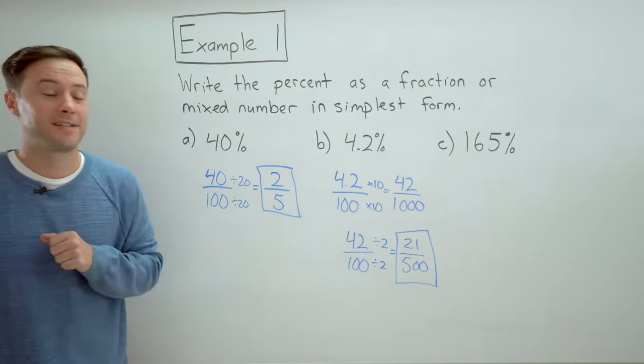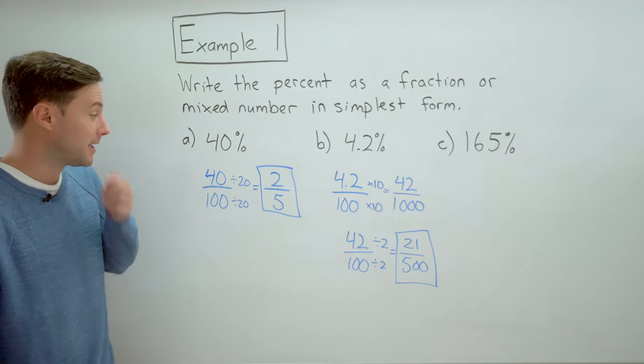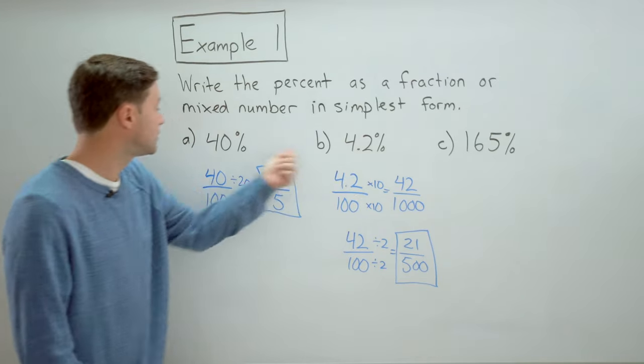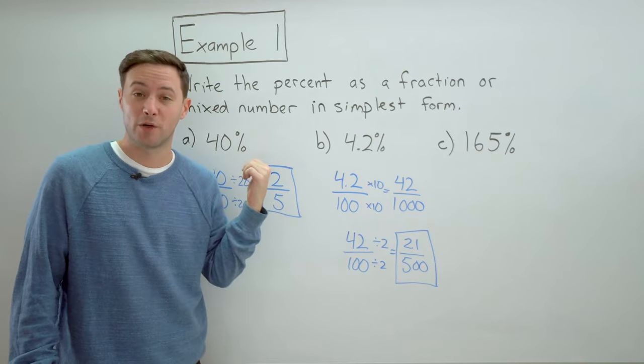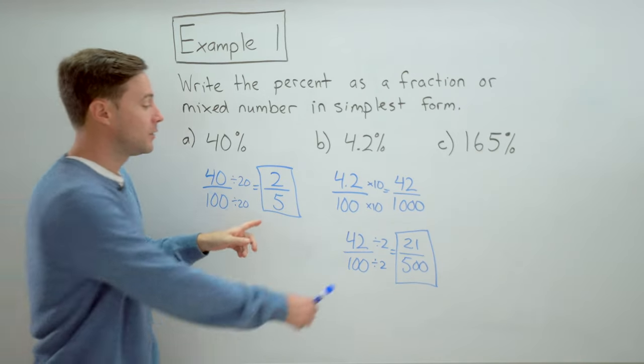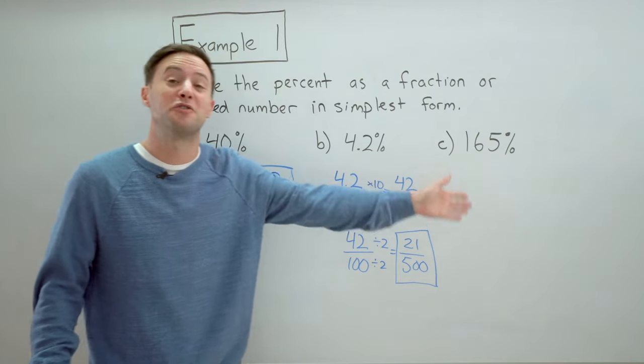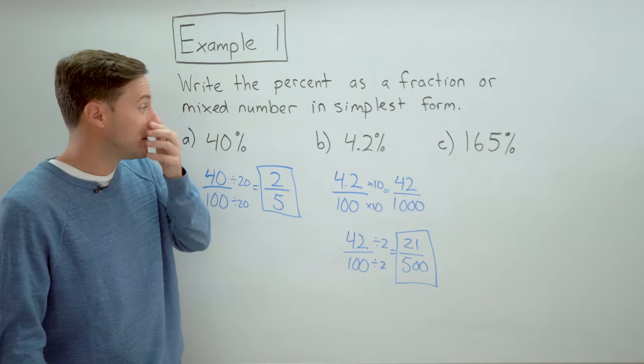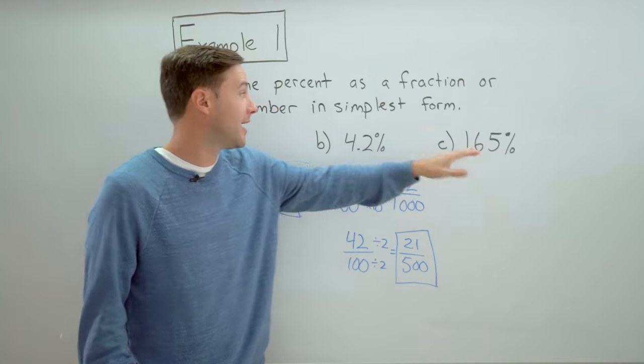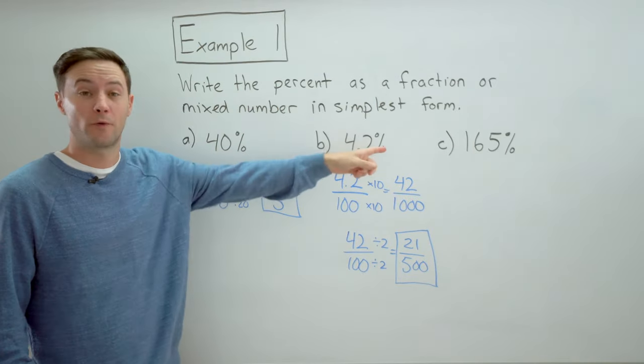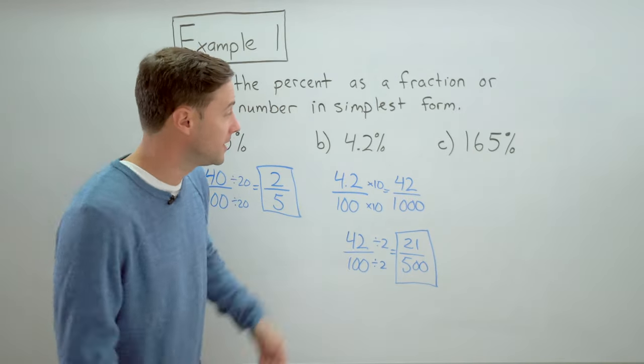And last one C. A hundred and sixty five percent. Now these first two were less than a hundred percent, which is why we got proper fractions for both. A hundred and sixty five percent is greater than a hundred percent. So we would expect to be getting a mixed number for the last one C. So here we go.